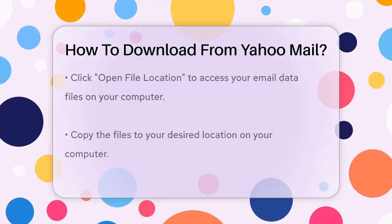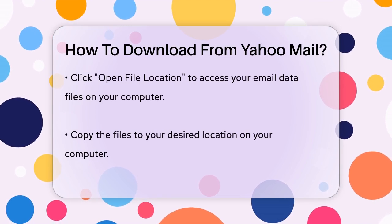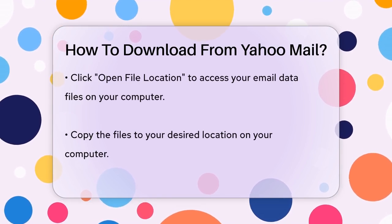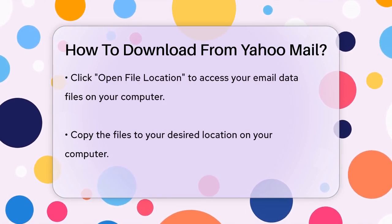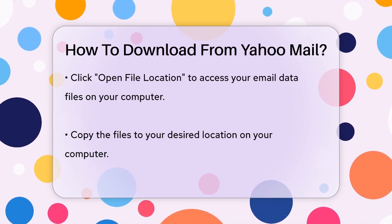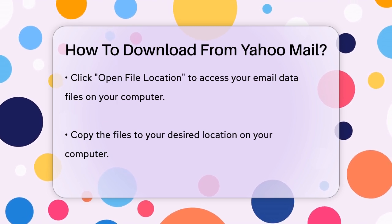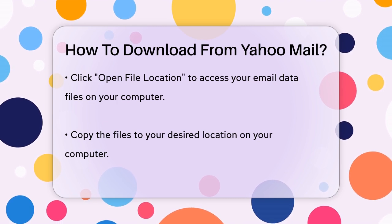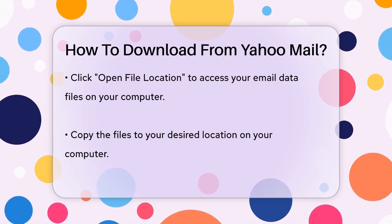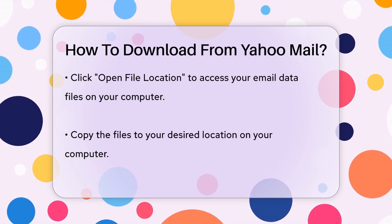Here you'll see a link or button that says Open File Location. Clicking on Open File Location will take you to the directory on your computer where your Yahoo Mail data files are stored. You can then copy these files to any location you desire on your computer. This method allows you to download and save your email files locally, ensuring you have a backup of your important emails.